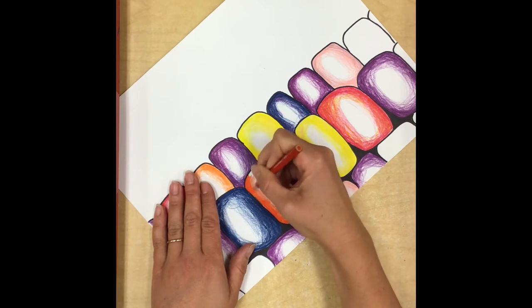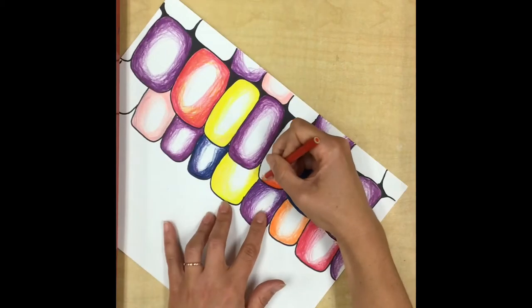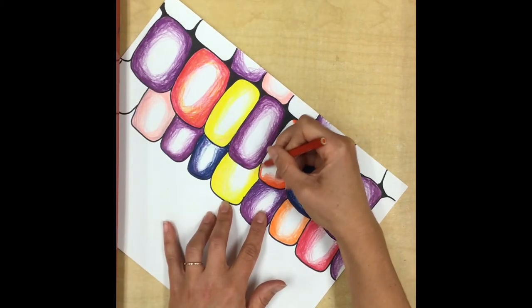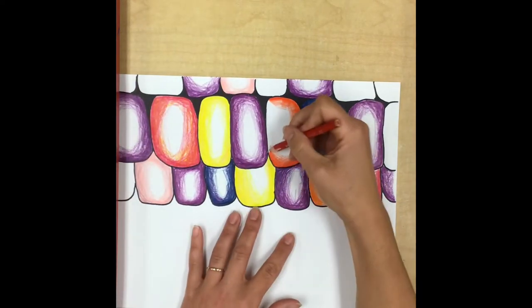So that the corn kernel actually looks rounded and three-dimensional, just like they are in real life. And of course, using these different values, these darks and lights, make the corn look like it's shiny just like it is in real life.